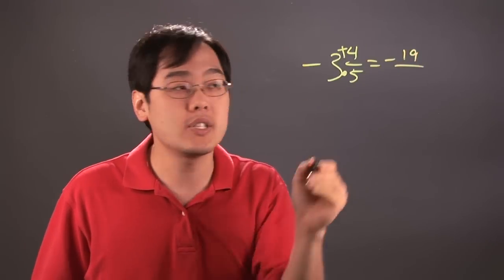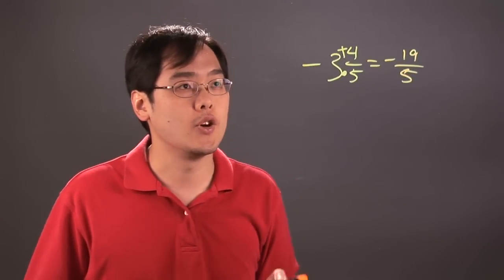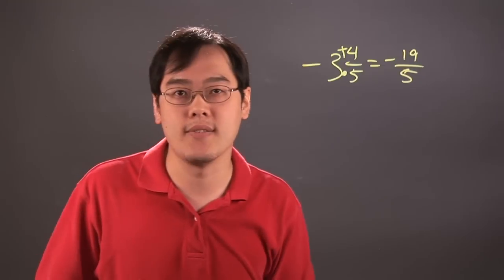And you always leave the denominator as is, so negative 3 and 4 fifths is going to be negative 19 over 5.